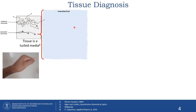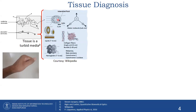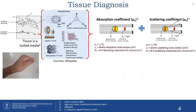Why does light get absorbed or scattered? It depends on the many tissue constituents — cells, water molecules, lipids, collagen fibers, hemoglobin, and others like melanin, beta-carotene, cytochrome C, and cytochrome C oxidase. All of these constituents together result in the absorption and scattering coefficients of the tissue.